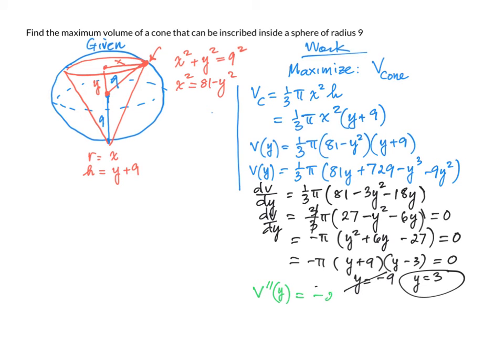That is going to be negative 2y minus 6. Now, I substitute 3 into the second derivative. So I get v double prime of 3 equals negative 2 times 3 minus 6. And that is less than 0.